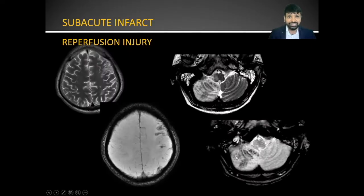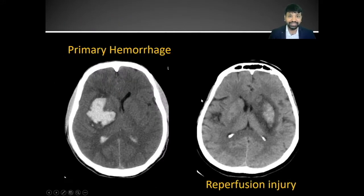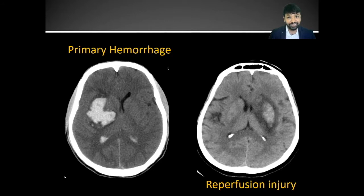Reperfusion injury in the convexities or in the posterior fossa happens in a gyreform fashion. But in the basal ganglia there will be some amount of doubt between reperfusion injury and primary hemorrhage. This gets a little tricky, but there are a couple of things by which we can differentiate between these two entities in the majority of cases.